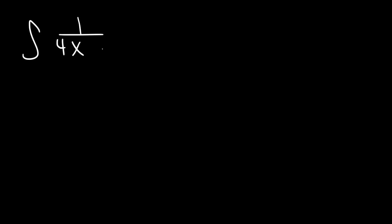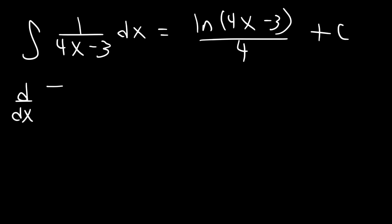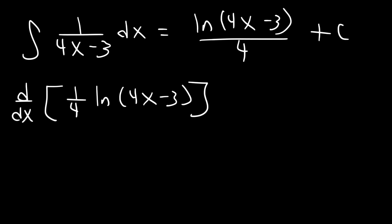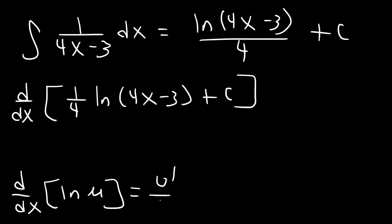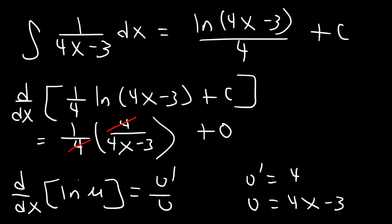Try this one: the antiderivative of 1 over 4x minus 3. The answer is the natural log of 4x minus 3 divided by 4, plus c. Let's confirm by differentiating one-fourth ln of 4x minus 3. Using the formula d/dx[ln u] = u prime over u, where u is 4x minus 3 and u prime is 4, we get one-fourth times 4 over 4x minus 3. The 4s cancel, giving us 1 over 4x minus 3 — confirming the answer.